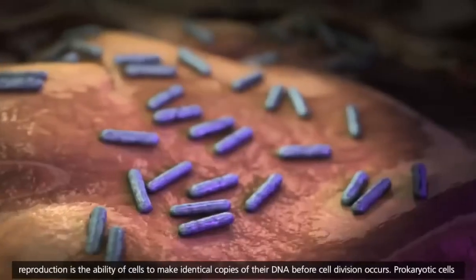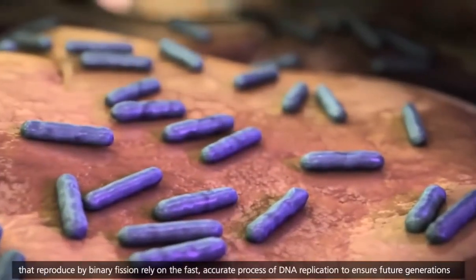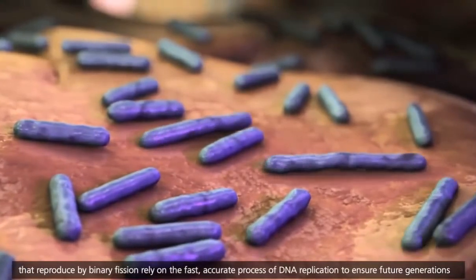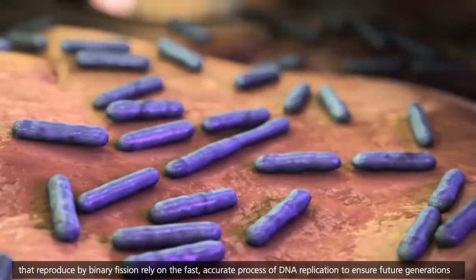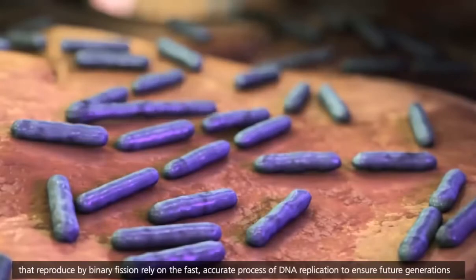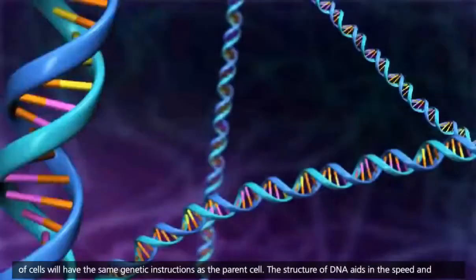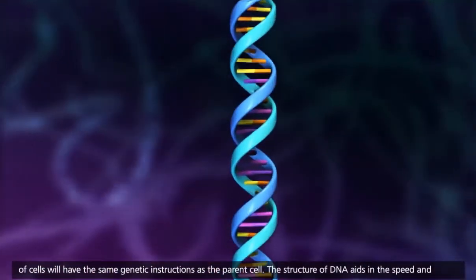Prokaryotic cells that reproduce by binary fission rely on the fast, accurate process of DNA replication to ensure future generations of cells will have the same genetic instructions as the parent cell.